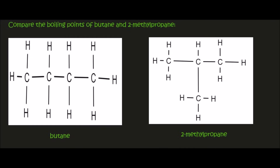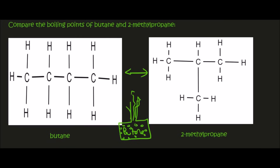Let's start off with butane. Remember, we're not going to separate these two from each other. If someone gives you a bottle of butane, then all that's going to be in that container would be butane. You would have trillions and trillions of these little molecules floating around in the liquid phase. If you want to turn that into a gas, you would have to heat up that container so that all the intermolecular forces could be broken, and the particles can escape from one another and go into the gas phase.